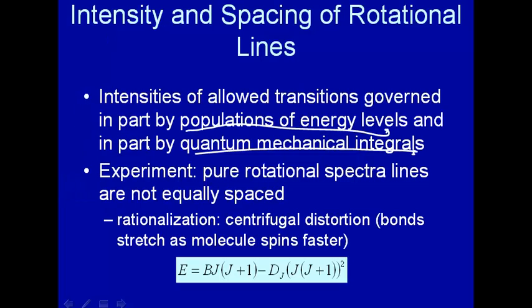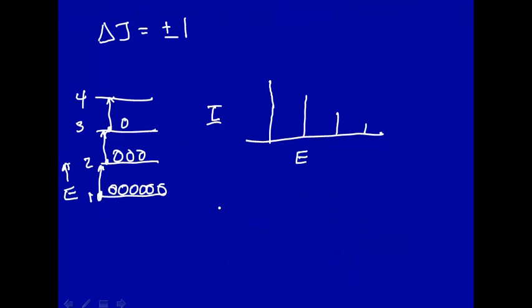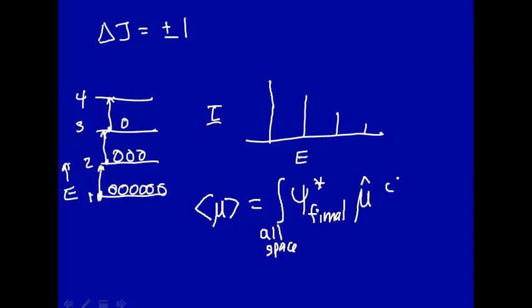The second contribution to the intensity is this quantum mechanical integral. Recall that we defined a transition dipole moment to be equal to this integral over all space of the wave function of the final state, complex conjugate, times the dipole moment times the wave function of the initial state integrated over some volume space.